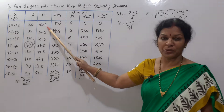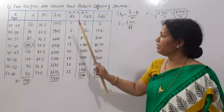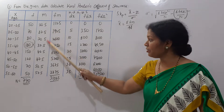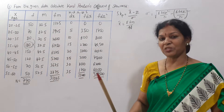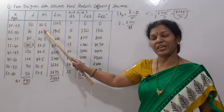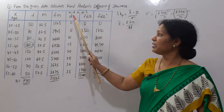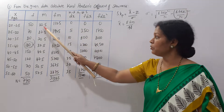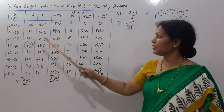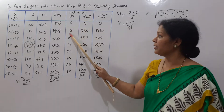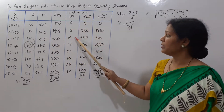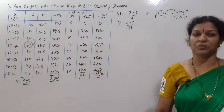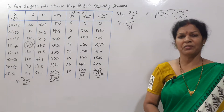I assume the first mid value 22.5 as the assumed mean (a = 22.5). So dx values: 22.5 − 22.5 = 0, then 27.5 − 22.5 = 5, and 32.5 − 22.5 = 10. These are our dx values. If values are below the assumed mean, we get negative dx values.